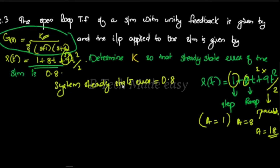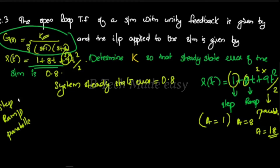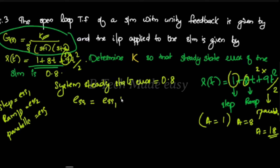The three inputs are step, ramp, and parabola. The total steady-state error is ESS1 plus ESS2 plus ESS3, and that total equals 0.8.